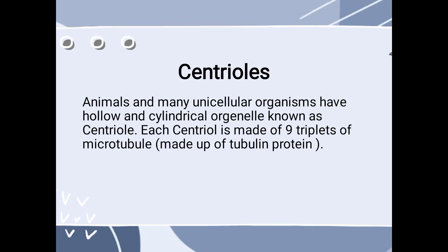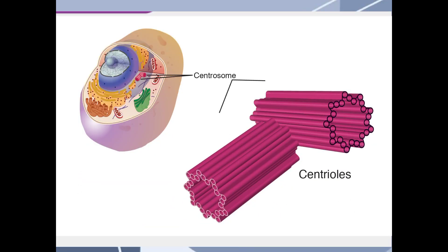Each centriole is made of nine triplets of microtubules, and microtubule is made up of tubulin protein. Here is the location of centriole within a cell, and you can see that it is present just around the nuclear envelope.